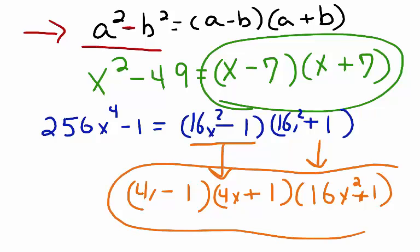So now, 4x minus one times 4x plus one times 16x squared plus one represents a completely factored polynomial expression using the difference of two squares formula.